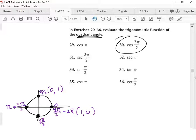What are the coordinates for π? Negative one, zero. And then what are the coordinates for 3π/2? Zero, negative one. And once we know that, we know all of them.